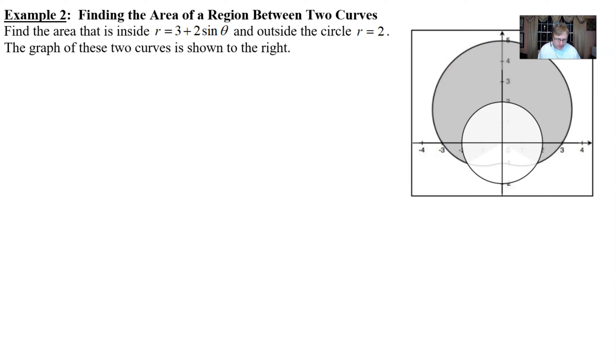Here's our graph a little bit larger with a little bit more detail. We now have information about the equations of these polar curves. Find the area that is inside the polar region r = 3 + 2sin(θ) and outside the circle r = 2.